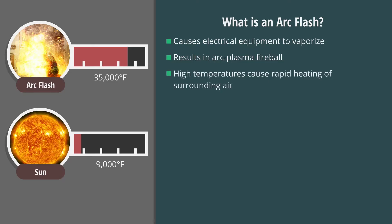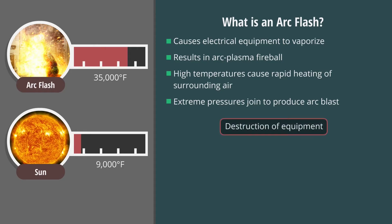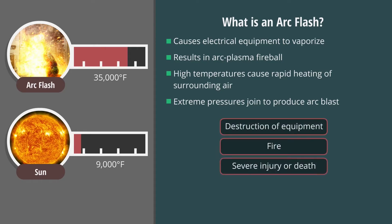These high temperatures also cause rapid heating of the surrounding air, and extreme pressures join to produce the arc blast. The arc blast will further vaporize electrical equipment, including solid copper conductors, which can expand up to 67,000 times their original volume. The result of this violent event is usually destruction of the equipment involved, fire, and severe injury or death to any people who are nearby.